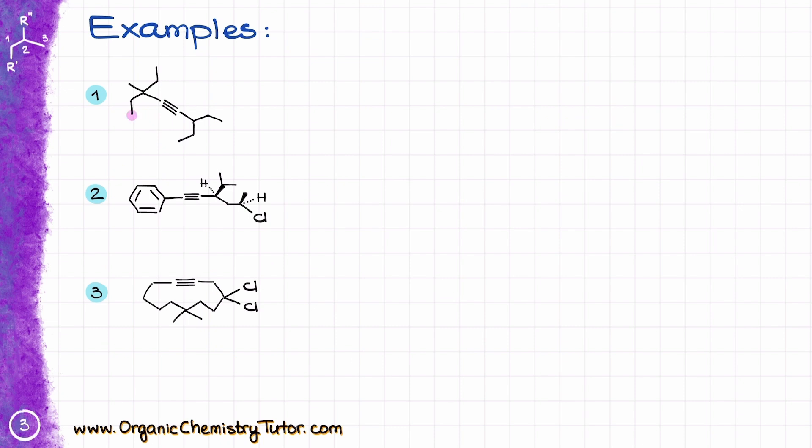Now, let's look at a few examples here. In the first molecule, I have 1, 2, 3, 4, 5, 6, 7, 8. So I have 8 carbons in my longest chain containing the triple bond.